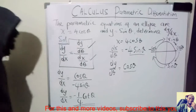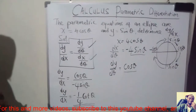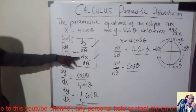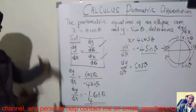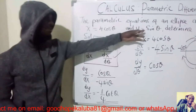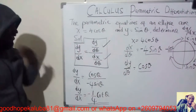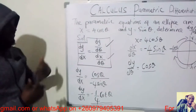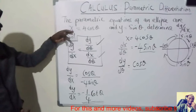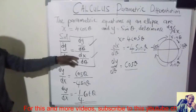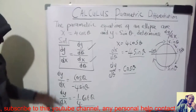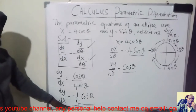So every time you are given parametric equations, use this formula: differentiate y with respect to the third variable, differentiate x with respect to the third variable, then divide the two. Sometimes the parameter is not theta but t, so dy over dx in terms of t will be dy/dt divided by dx/dt. For this and more videos, subscribe to my YouTube channel. Thank you for watching.